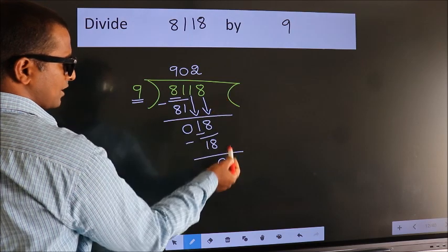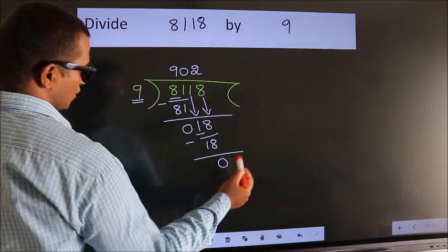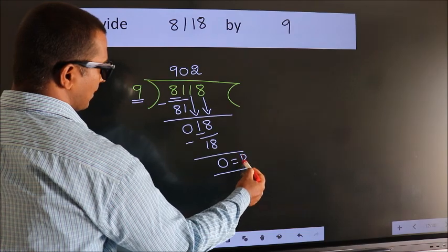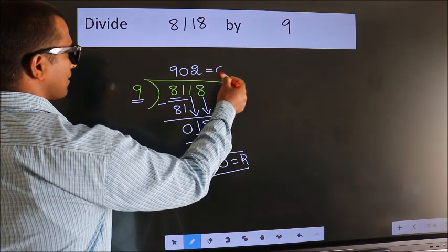No more numbers to bring down. So we stop here. This is our remainder. This is our quotient.